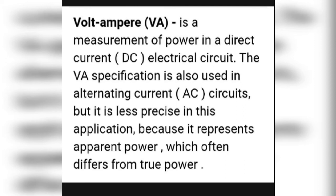Volt-ampere is a measure of power in direct current (DC). In a DC electrical circuit, volt-ampere is used as a specification. It is also used in alternating current (AC), but it is less precise in that application because it represents apparent power, which often differs from true power.